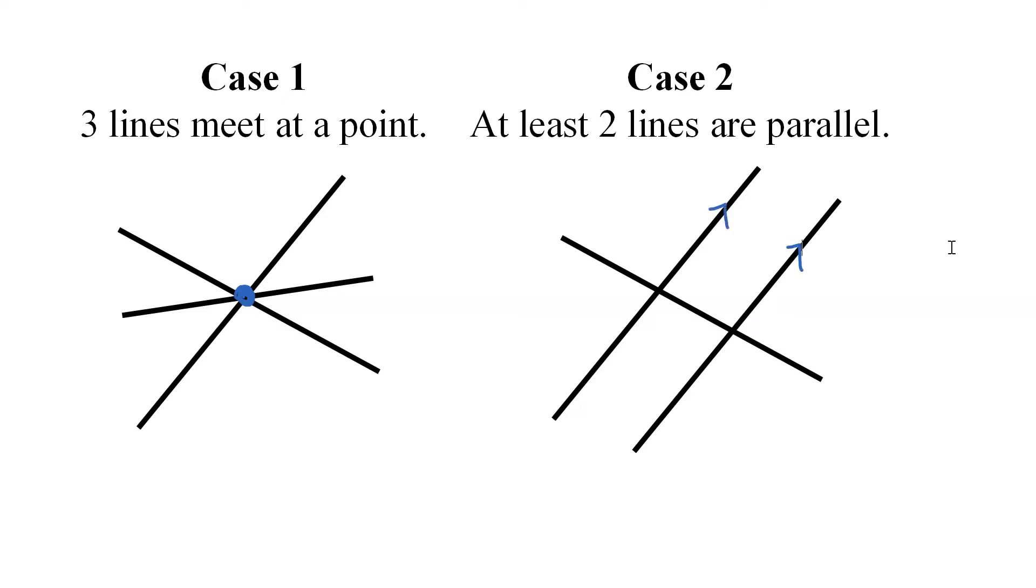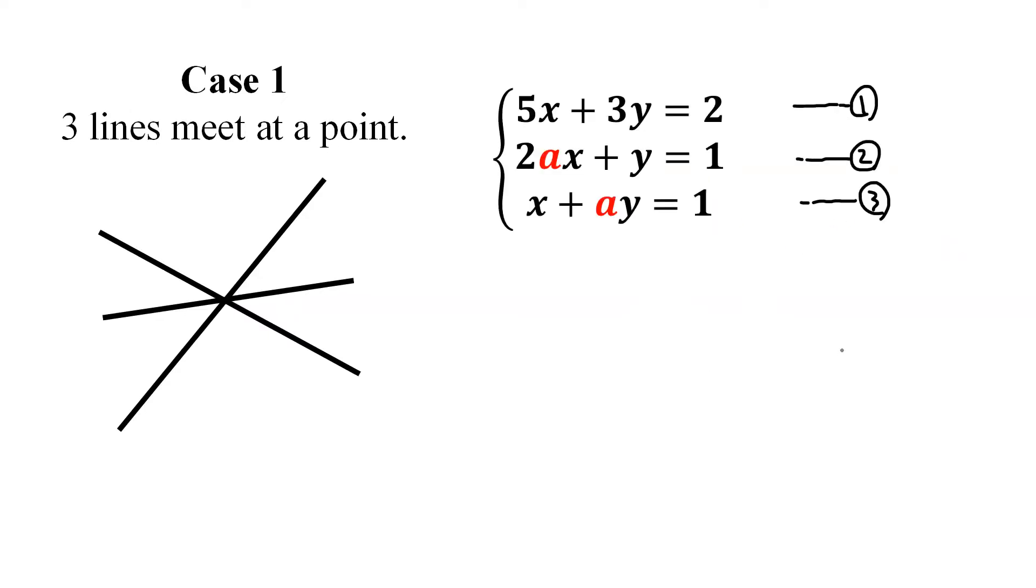So let us find A for each case. The first case, three lines meet at a point. So in this case, the intersection point between line one and two must also lie on the third line as well. So let's solve one and two to find the intersection point.